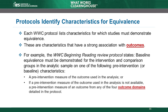For example, the beginning reading review protocol says studies must demonstrate baseline equivalence for the intervention and comparison groups in the analytic sample on one of the following pre-intervention characteristics: the same measure used as the outcome in the analysis, tested at baseline. If a pre-intervention measure of the same outcome is not available, it may be acceptable to use a baseline measure of an outcome from any of the four outcome domains detailed in the eligible outcomes section of the protocol. For example, a study can use a pretest from an alphabetics domain to establish baseline equivalence for the reading fluency measure if a reading fluency pretest is unavailable.